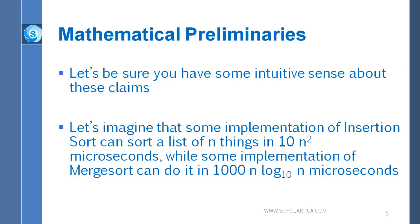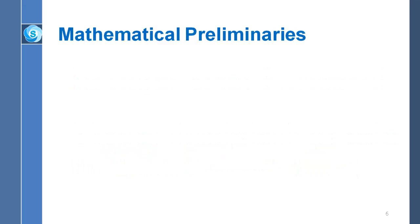And it just so happens that insertion sort can sort a list of n things in a time 10 times n squared microseconds, but merge sort requires 1000 times n times log to the base 10 of n microseconds. So maybe those formulas seem complicated to you or whatnot, but let's play with them and see what happens.